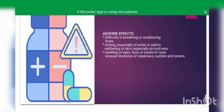Regarding adverse effects, when we administer anti-tetanus immunoglobulin, after some time we may observe some adverse effects. These include difficulty in breathing or swallowing, hives, itching especially of the soles or palms, reddening of the skin especially around the ears, swelling of the eyes, face or inside the nose, and unusual tightness or weakness.